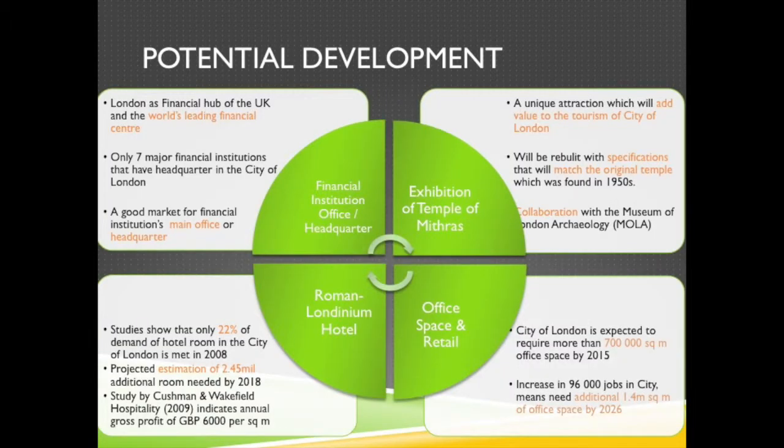We then decided to come up with four potential developments. The first is a financial institution or headquarter. The second is an exhibition of the Temple of Mithras. The third is a Roman Londinium Hotel. And the fourth is office space and retail.